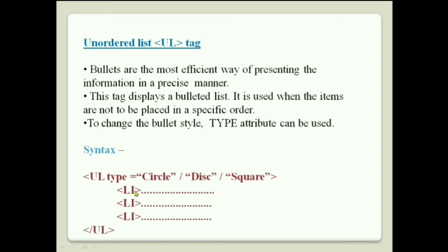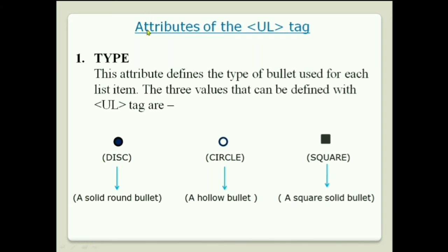LI tags must be used for each and every individual item, then close with slash UL. The type attribute of the UL tag defines the type of bullet used. The three values are: disk, which is a solid round bullet; circle, which is a hollow bullet; and square.